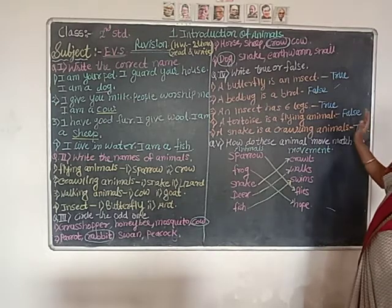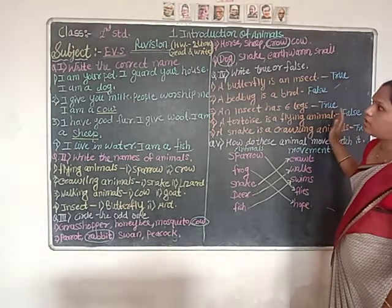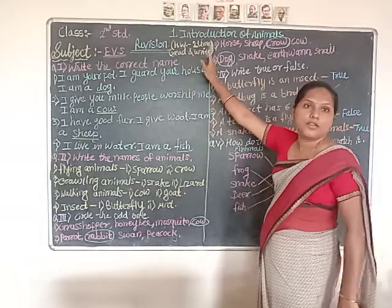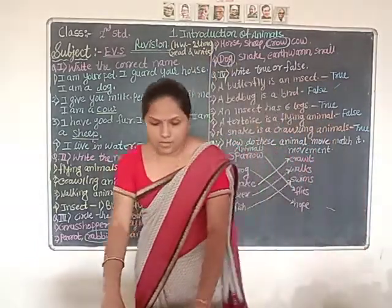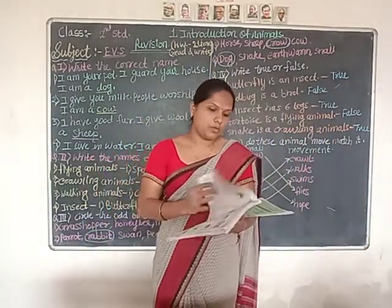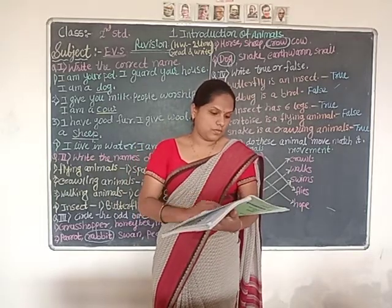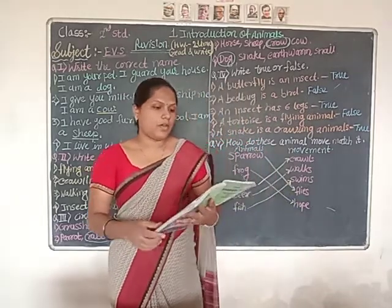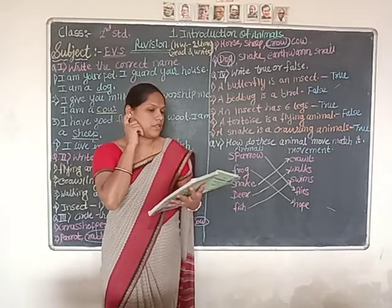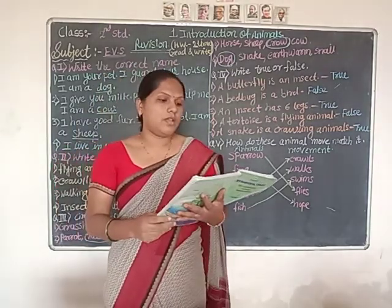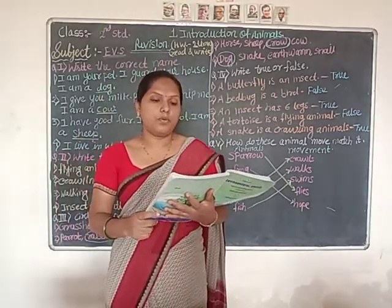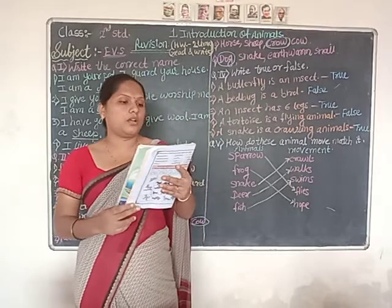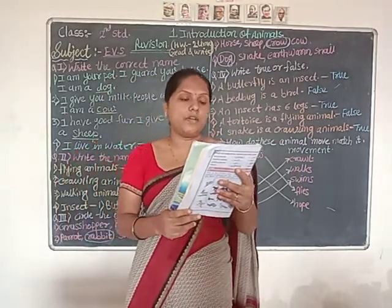This is your homework — do these at home. I have written HW here — read and write two times. Next, in your book there is also a coloring activity. Color the animals that walk in brown, birds in yellow, crawling animals in blue, and insects in red.